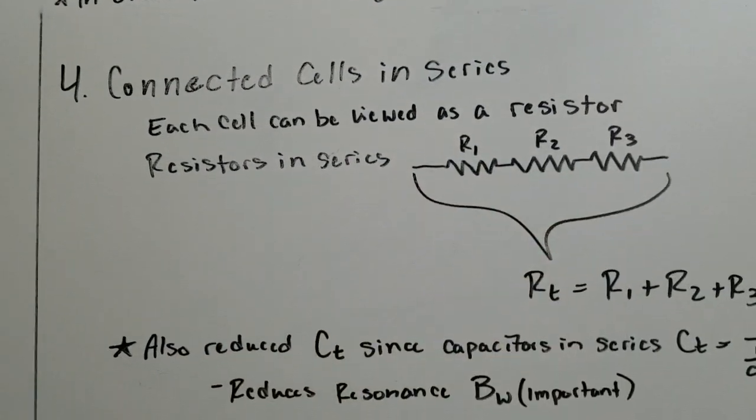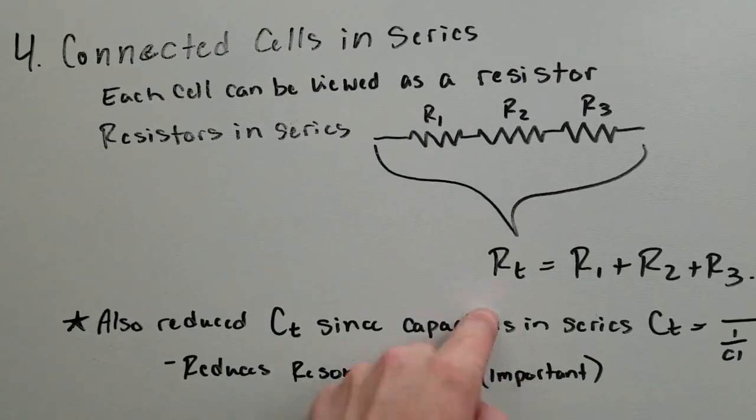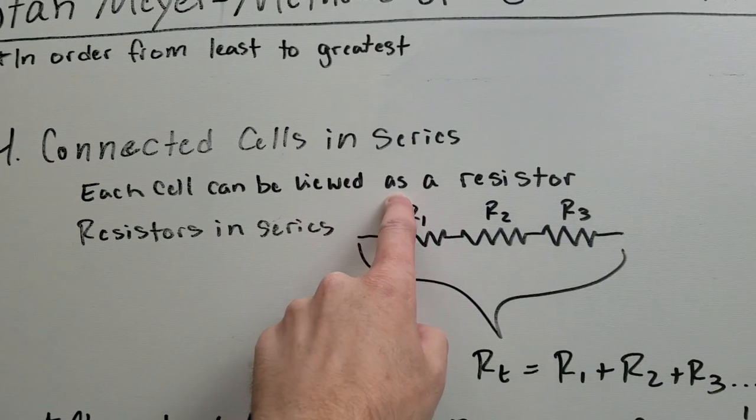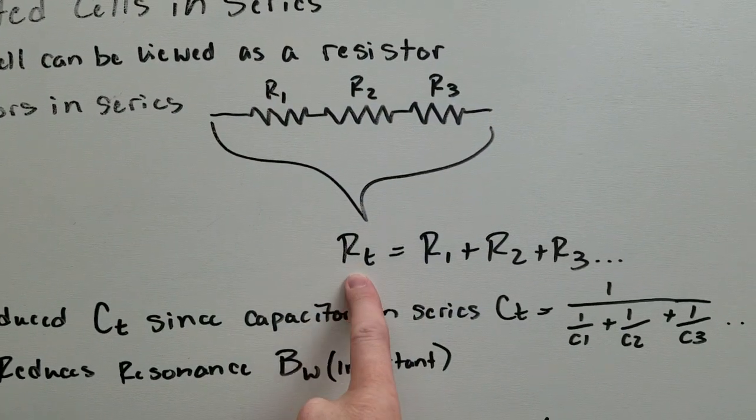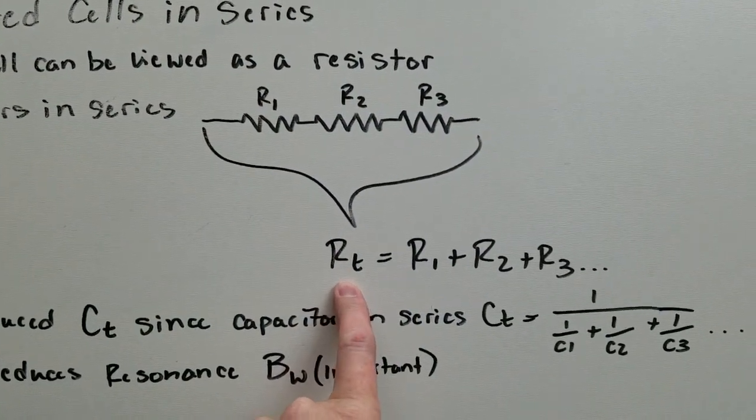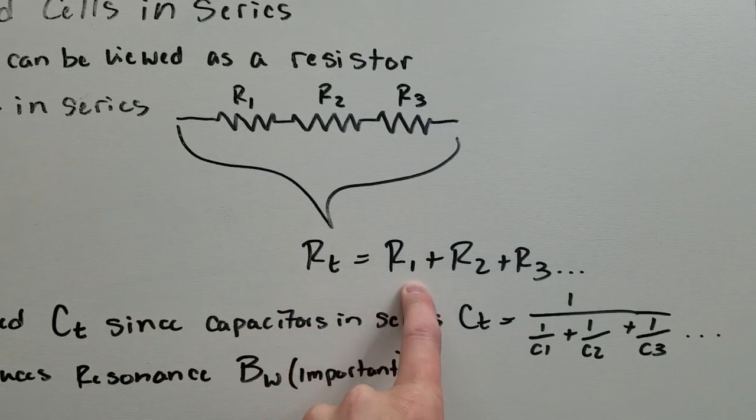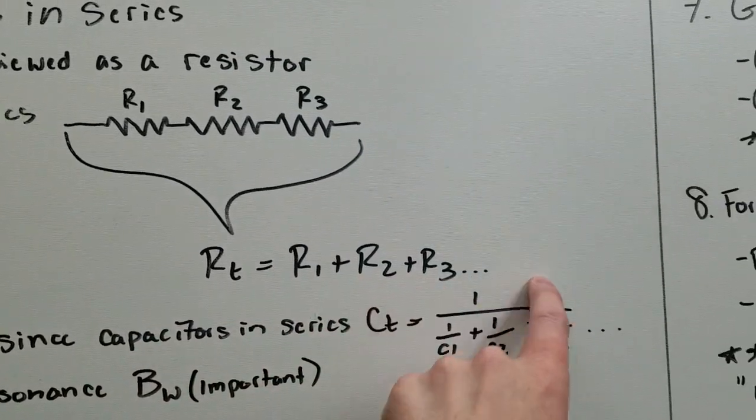Cuts it up into multiple cells, connects them in series. That gives you the resistance total. Each cell can be viewed as a resistor. So now here's the formula for resistances in series. RT is R1 plus R2 plus R3 and so on.